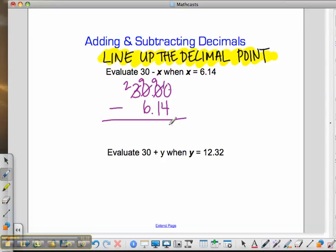10 minus 4 is 6. 9 minus 1 is 8. You may put in the decimal point. 9 minus 6 is 3. 2 minus 0 is 2. So, here is your answer for subtracting those decimals.